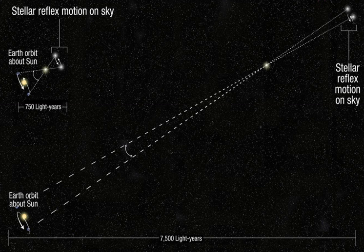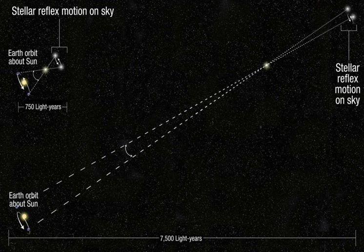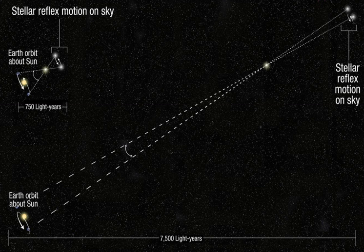Lunar parallax, often short for Lunar Horizontal Parallax or Lunar Equatorial Horizontal Parallax, is a special case of parallax. The Moon, being the nearest celestial body, has by far the largest maximum parallax of any celestial body — it can exceed one degree. The diagram for stellar parallax can illustrate lunar parallax as well, if the diagram is taken to be scaled right down and slightly modified: instead of the circle representing the Earth's orbit around the Sun, take it to be the size of the Earth's globe and a circle around the Earth's surface.